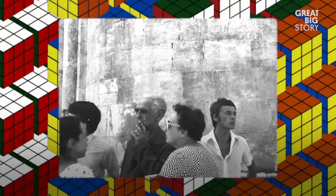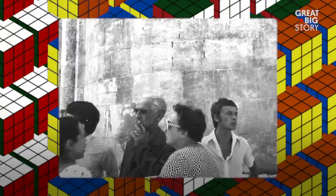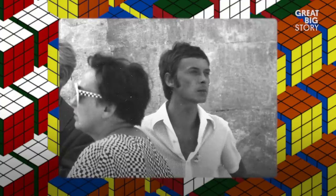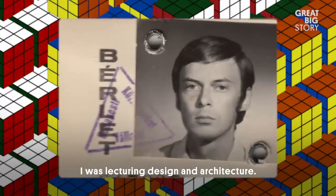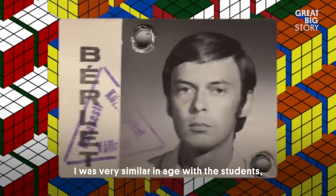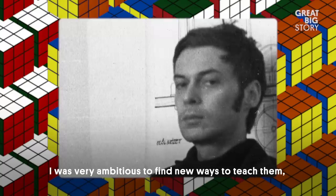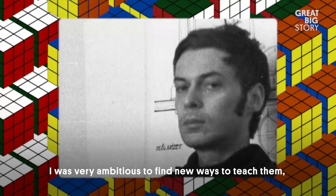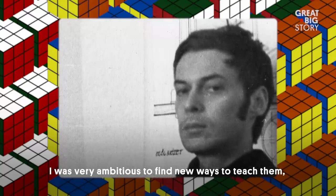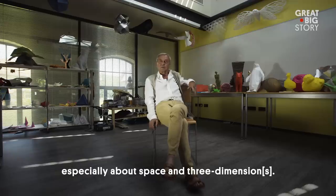It was 1974. 30-year-old Erno Rubik was just beginning his career in academia. I was lecturing design and architecture. I was very similar in age with the students. I was very ambitious to find new ways to teach them, especially about space and three dimensions.